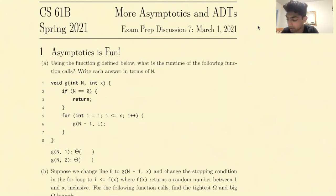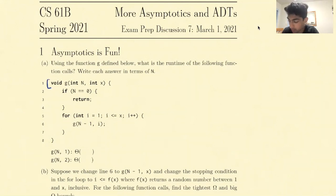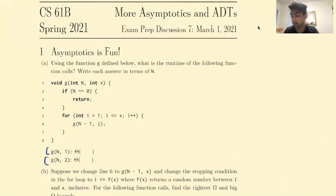Let's dive into problem 1. Using the function g defined below, what is the runtime of the following function calls? Write each answer in terms of n. So we have some function g, and we're trying to figure out what is the runtime of g(n, 1) and g(n, 2). For both of these runtimes, we're using a theta bound.